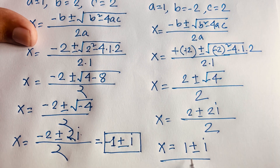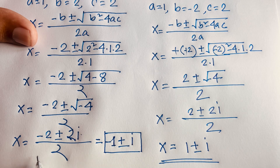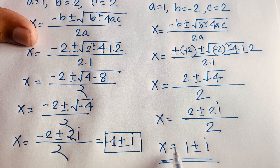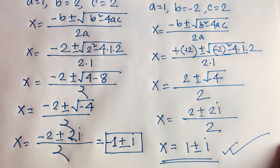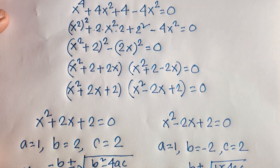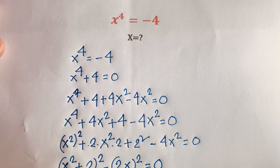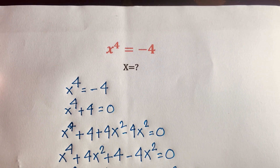So our final answers are x = -1 ± i and x = 1 ± i. Thank you all. If you enjoyed this video, please subscribe to my channel for more interesting videos. Goodbye, take care.